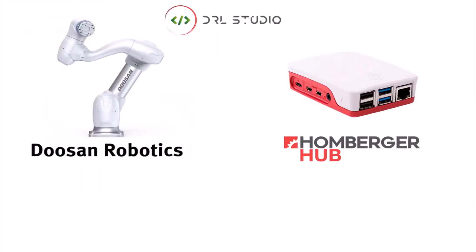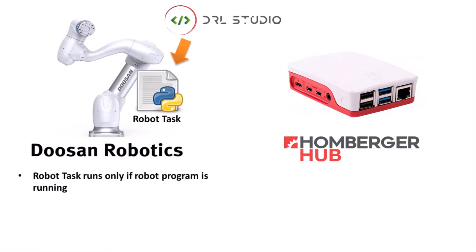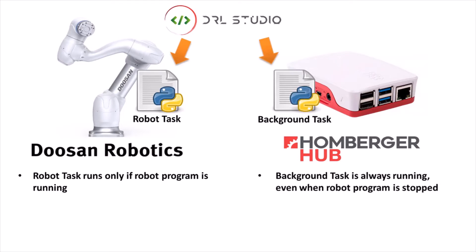So what is a background task? Usually we use DRL Studio to develop Python scripts that compose the robot task. But those scripts are running only when the robot task is running. In a very similar way, we can use DRL Studio to develop background tasks. Background tasks are always running, even when the robot task is stopped. This can be very useful to keep integration with other devices alive when the robot program is not running.